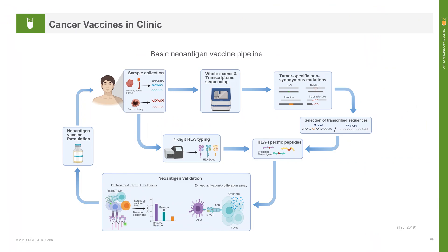Neoantigens are encoded by genes containing nonsynonymous mutations in tumor cells, which result in unique amino acid changes with the potential to be targeted by the immune system. Neoantigens are perceived to be key to unique and personalized cancer vaccines. Today, advancements in high-throughput screening, including whole genome and whole exome sequencing, are contributing to the identification of neoantigens, closing the gap between theory and practice. A basic neoantigen vaccine pipeline can be divided into six processes: sample collection, whole exome and transcriptome sequencing, selection of transcribed sequences, HLA typing, neoantigen validation, and neoantigen vaccine formulation.